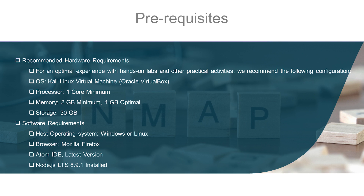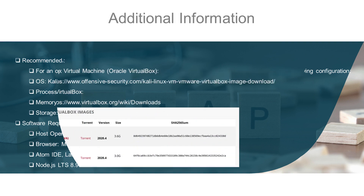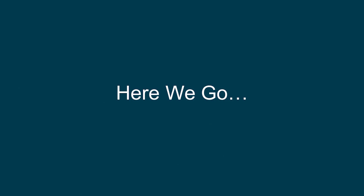Here are some resource links we've provided for you. If you don't know how to download the Kali Linux virtual machine or Oracle VirtualBox, just click the link or search it. You can find Kali Linux at offensive-security.com, which is the website that publishes the Kali Linux downloads. The second link is for Oracle VirtualBox — you can download and install it based on your preferred system. There's a sample picture here in case you're confused when visiting the website. Alright, let's go — see you in the course!